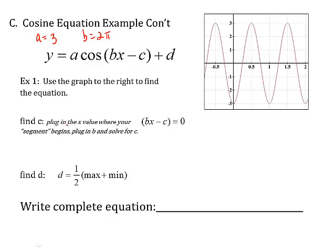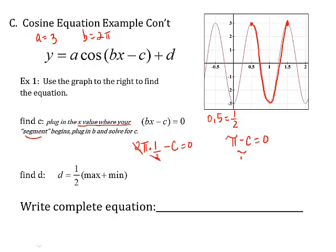Now we're going to do c. Remember our segment? I'm going to just darken it in one more time. Now to find c, you're going to plug in the x value where your segment begins. So what is that x value? Well, that x value is 0.5, or 1 half. Then you're going to plug it into this value right here. So b, we said, was 2π times x minus c equals 0. So when I multiply this, I get π minus c equals 0. Add c to both sides - that means π is c, or c is π.